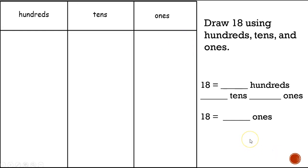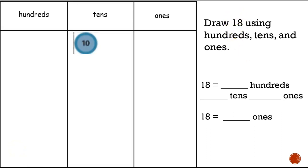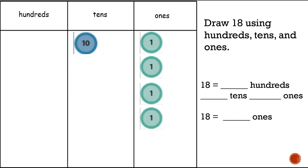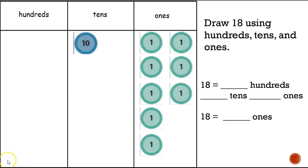Here's another one. We need to draw 18 using hundreds, tens, and ones. How many hundreds do I need? I don't need any hundreds. How many tens? I need one — here's my one ten. How many ones? Eight. So let's add eight ones: one, two, three, four, five, six, seven, eight.